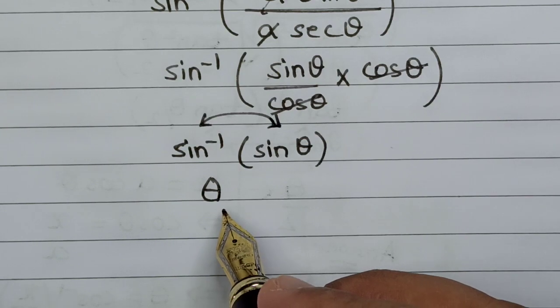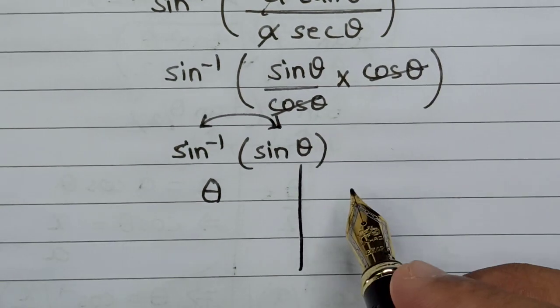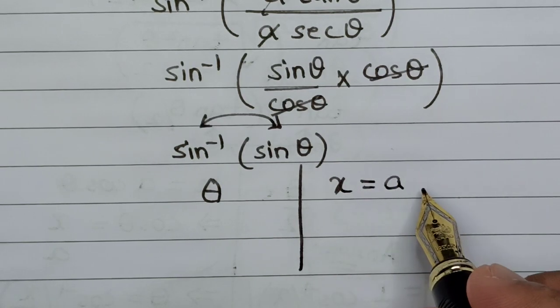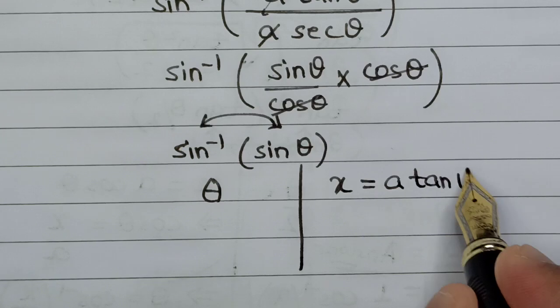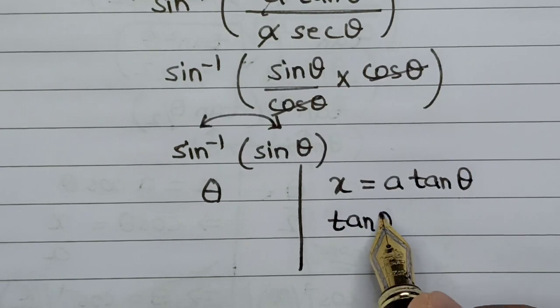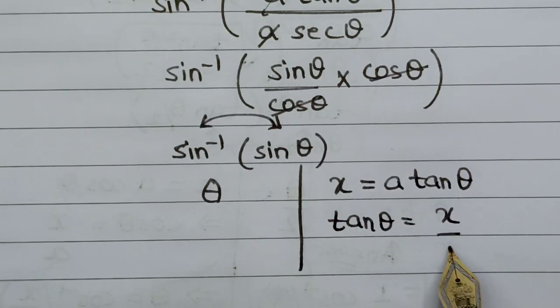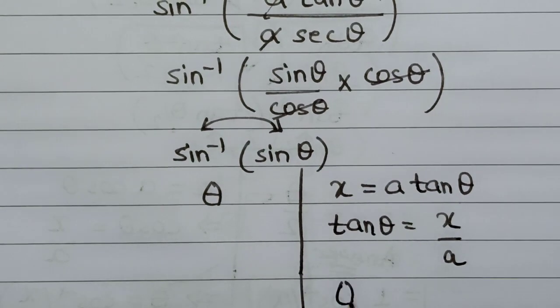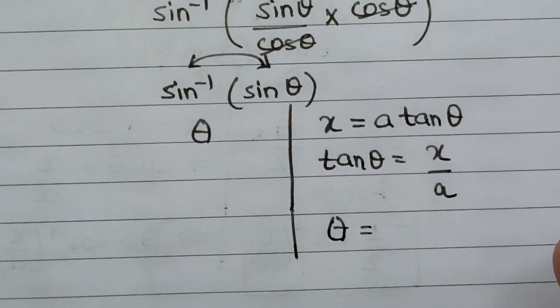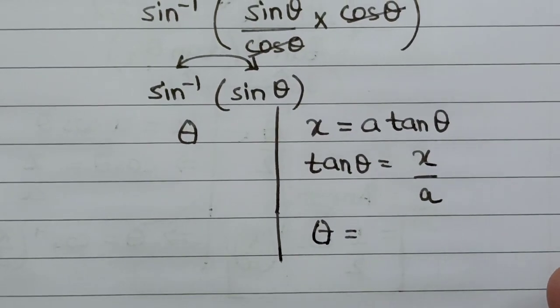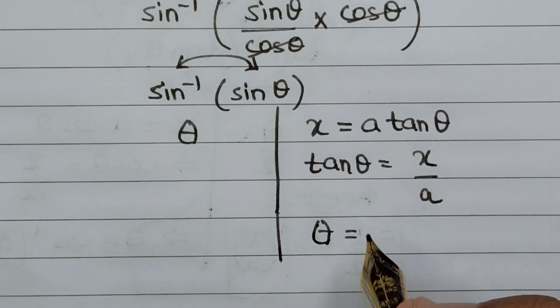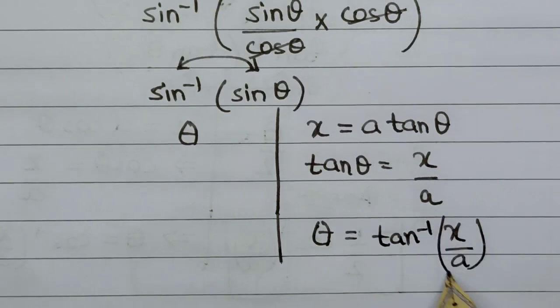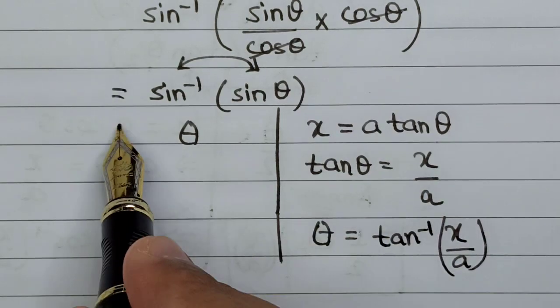But we cannot leave the answer in terms of theta since this is a variable we introduced. We go back to where we started: we substituted x as a tan theta. So if we calculate the value of theta, tan theta equals x divided by a, therefore theta equals tan inverse of x divided by a.